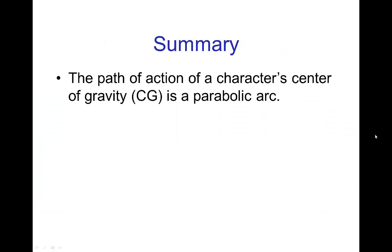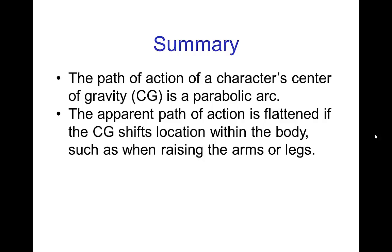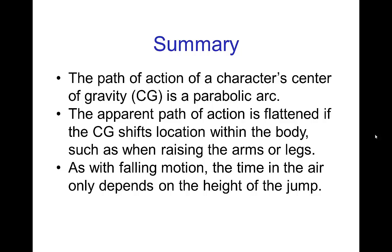In summary, the path of action of a character's center of gravity is always a parabolic arc. The apparent path of action may be flattened if the center of gravity shifts location within the body and this commonly happens when the character raises their arms or legs. As with falling motion, the time in the air for a jump only depends on the height of the jump. We saw the table that gives you the matching time given the height or you can go the other way given the time, you can find how high the jump would have to be. Finally, we commonly see this timing distorted in special action sequences where wire work is used which distorts the time in the air by keeping the characters in the air longer than they normally would given the height of their jumps.